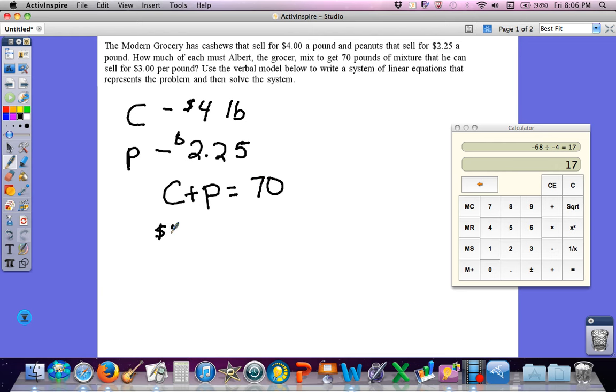So for my value equation, cashews are $4, peanuts are $2.25. And my value is, I want it total. These are the prices. It's going to be $3 per pound, and how many pounds did I say I was going to have to have? 70. So $4 of some pounds of cashews, $2.25 of some pounds of peanuts.